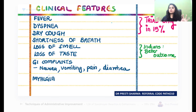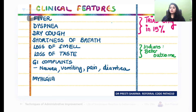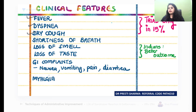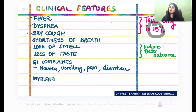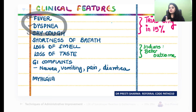Clinical features: the classic presentation includes fever, dyspnea, and dry cough. Earlier patients presented with high-grade fever; in the second wave in India, a 99°F low-grade fever is now the recent trend. The triad of fever, dyspnea, and dry cough is actually seen in only 15% of patients, as reported by WHO and ICMR.